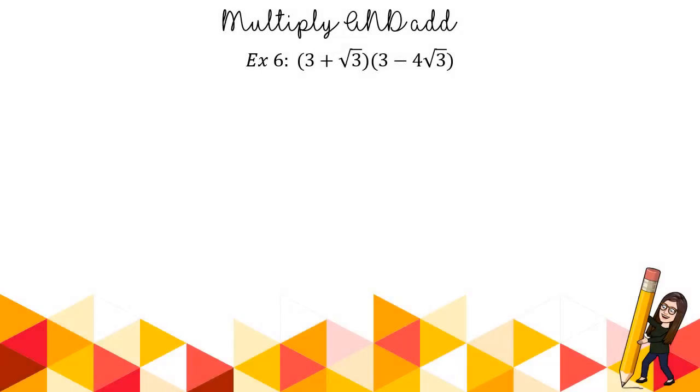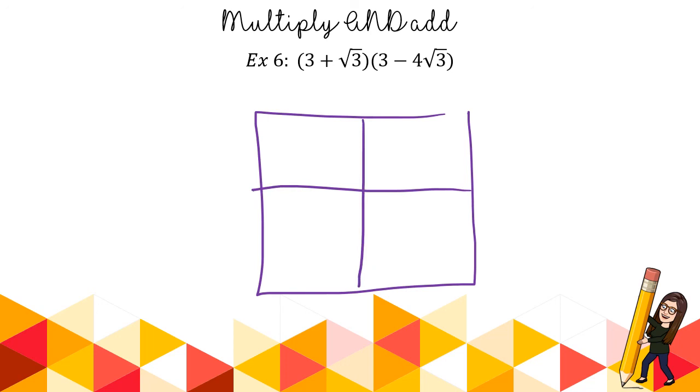Alright. So I said if you're struggling with the double distribution or the foil, to check out this last slide. So I'm going to also show the box method. I'm going to go ahead. This goes back to my multiplying polynomials video. When you have a binomial, that's two columns. And a binomial, two rows. Sometimes this makes it a little easier. Meaning, 3 times 3. 9. It's just an organizing tool.